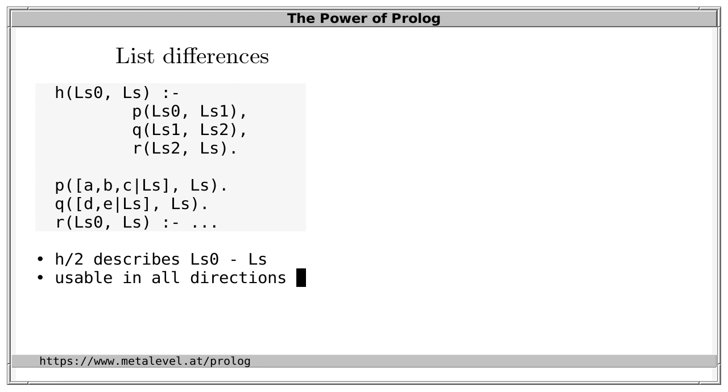If all these predicates are pure, then this is a true relation which can be used in all directions. Procedurally speaking, we can use h to test, generate and complete lists. It's also efficient because the runtime of each of these predicates is independent of the length of the list up to that point.